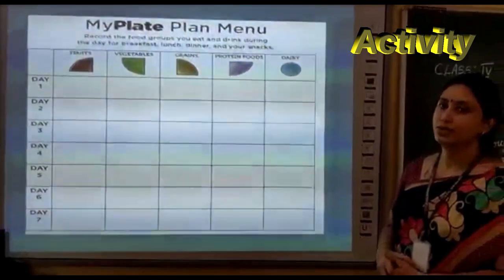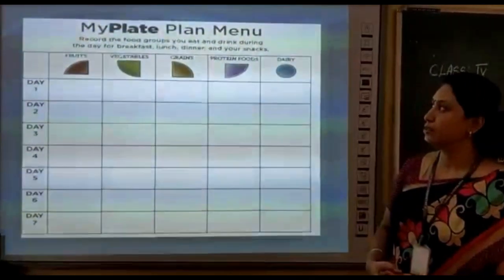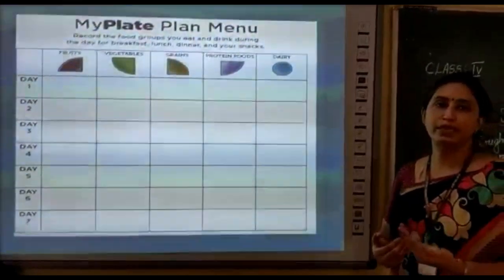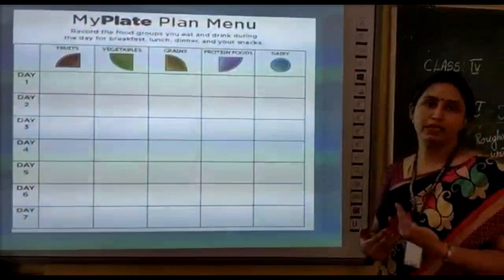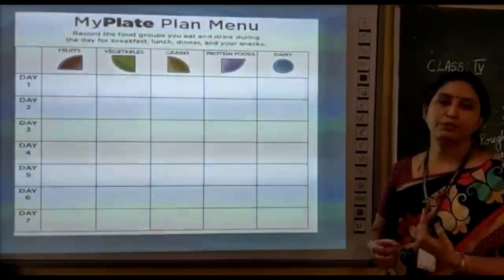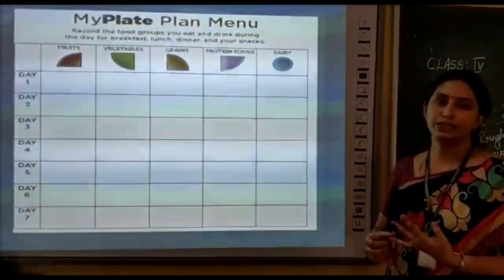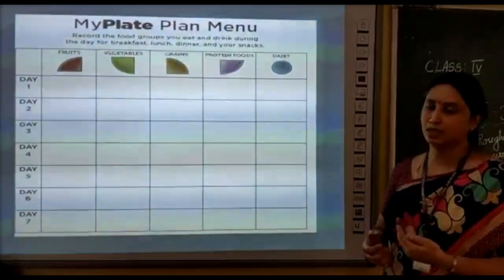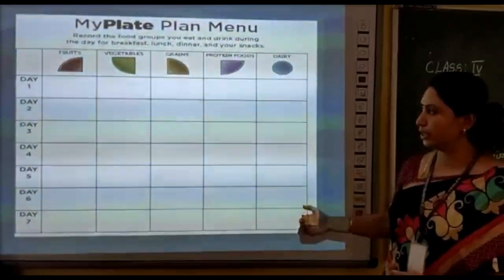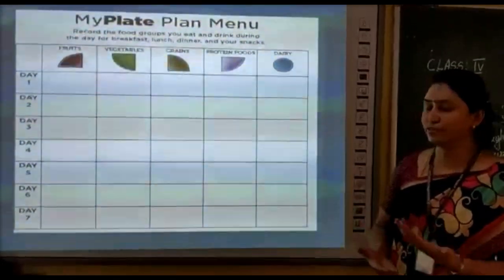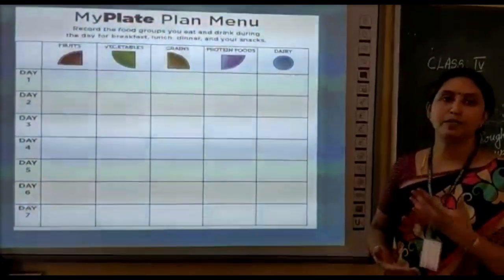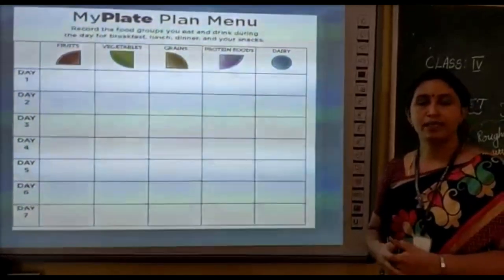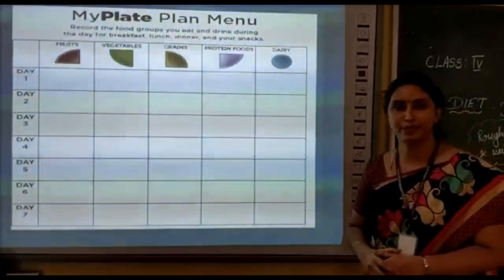Let's do an activity. You should list what food items you are taking in — during your breakfast, lunch and dinner — and record what nutrients are in them for a week. Then check whether you are taking a balanced diet or not. That's all for today. Thank you.